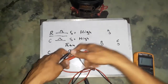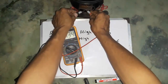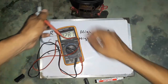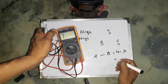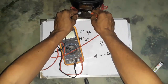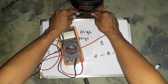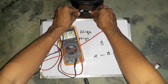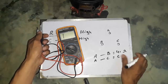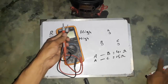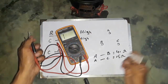First I test the resistance between A and B, and it shows 41 ohms. Then I check between A and C, which shows 15 ohms. Finally I check the resistance between B and C, which shows 57 ohms.